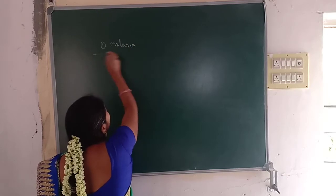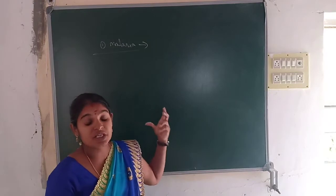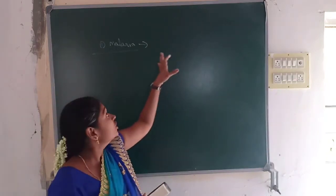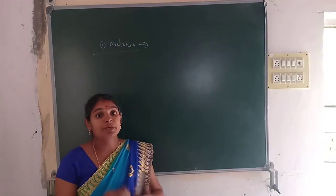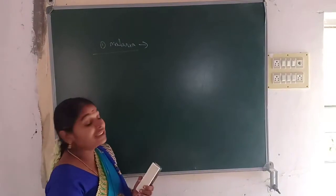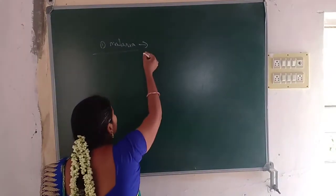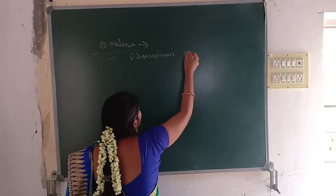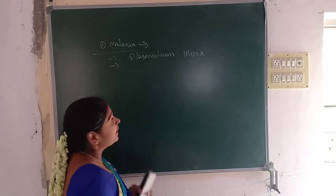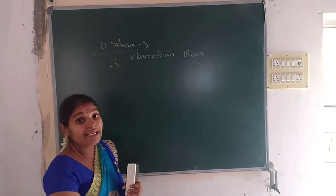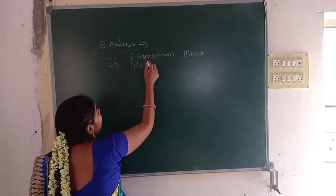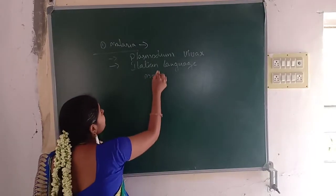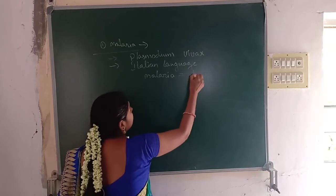Among the protozoan diseases, malaria is the most dangerous and pandemic disease, spreading worldwide from patient to patient at a rapid rate. Malaria is caused by a protozoan organism known as Plasmodium vivax. The term malaria was derived from an Italian language word, which means bad air — malaria means bad air.